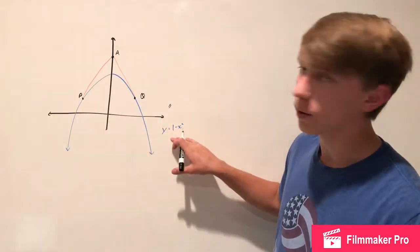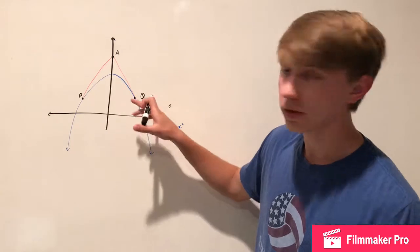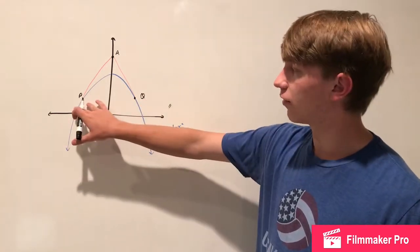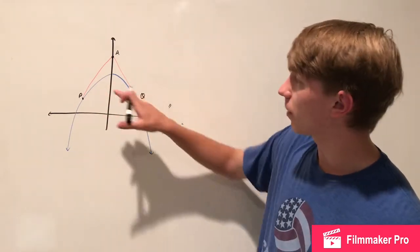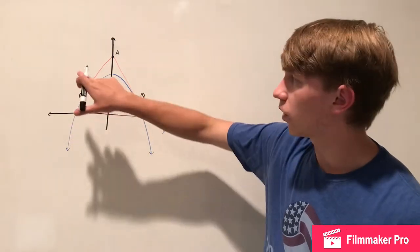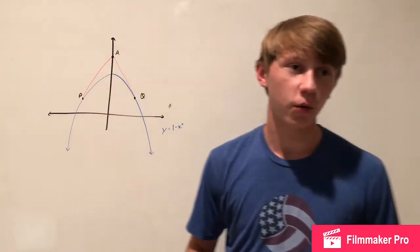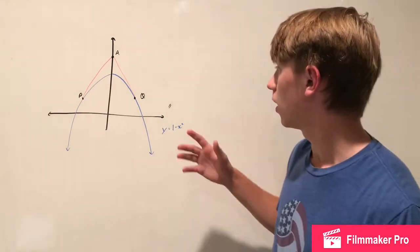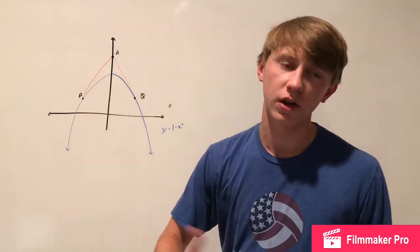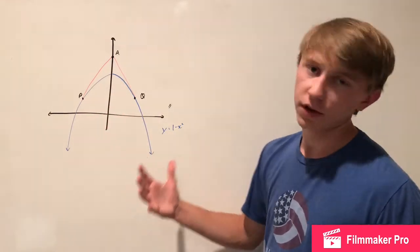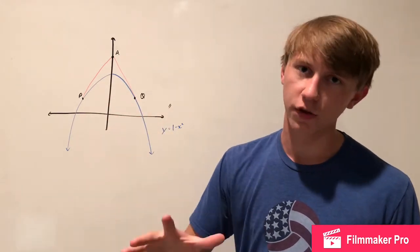Here's problem 1. We're given the function y equals 1 minus x squared, and we need to find the coordinates of the two points P and Q such that the tangent lines at P and Q form an equilateral triangle with where they intersect the y-axis. A good strategy to see right off the bat is that P and Q are going to have the same y value and just the negative x value, so we can focus on Q and then flip the x value for P.